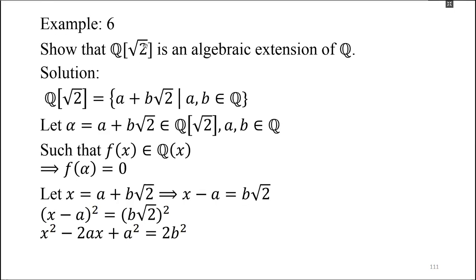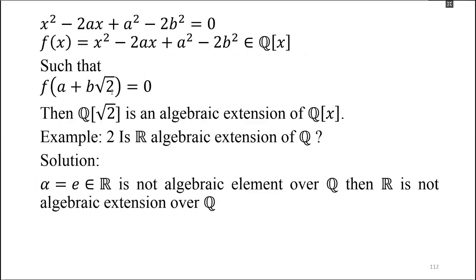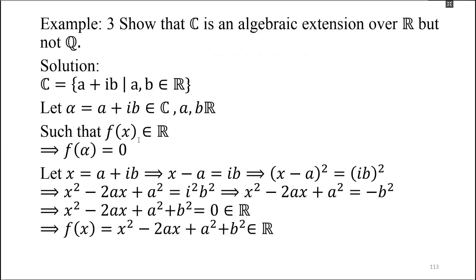The extension field element α, if it satisfies a polynomial — that polynomial is called rational. You will conclude that it's an Algebraic extension. Otherwise it's not. We have done that. If you put the value of α in the polynomial, the value comes out to 0.